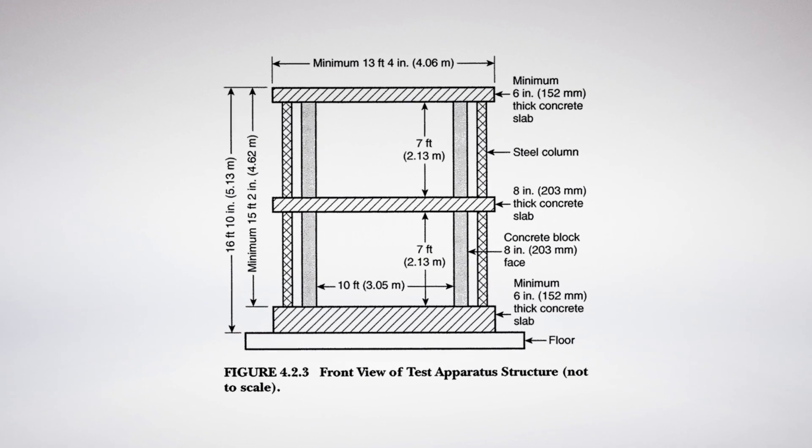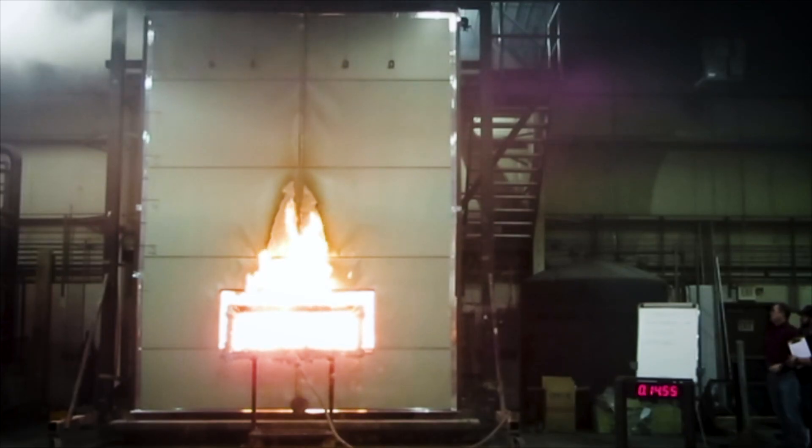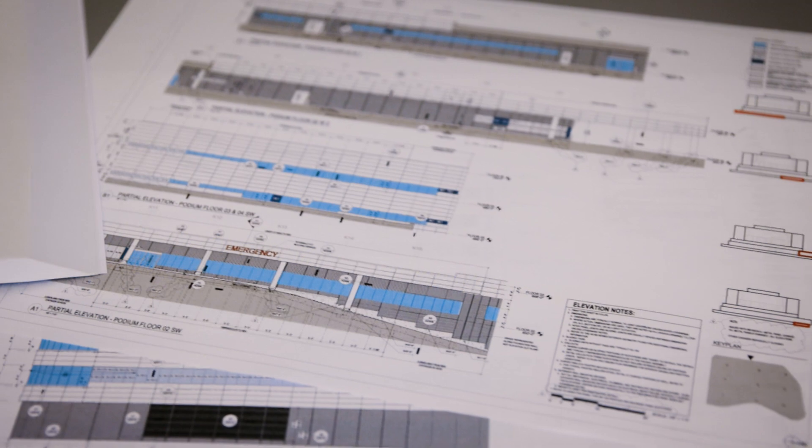When conducting an NFPA 285 test, we're looking at how all of the materials perform together. Another big key is that we want to incorporate worst case conditions to allow us to extrapolate the results within certain bounds, giving us the most flexibility for real world use. When a manufacturer is evaluating their product or system in an exterior wall assembly to NFPA 285, they want to ensure they are testing the worst case scenario — either reaching out to us as fire protection engineers and consultants to develop that worst case scenario.